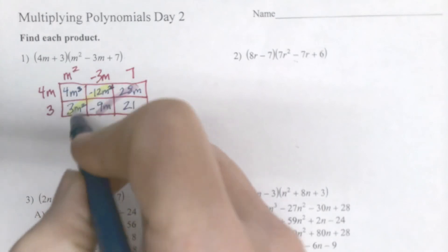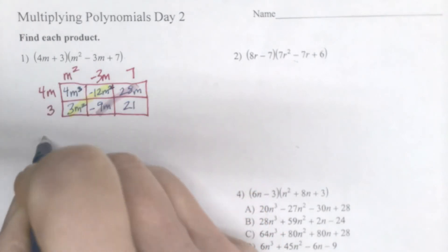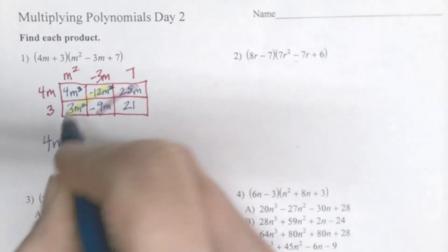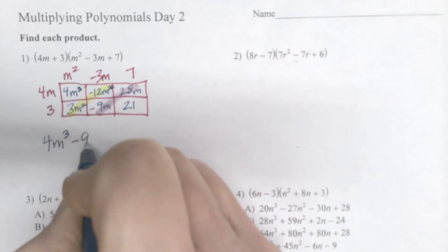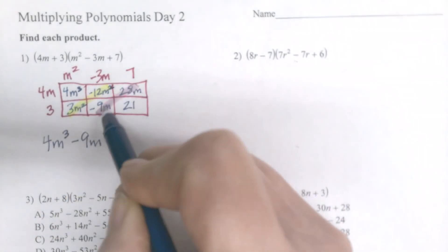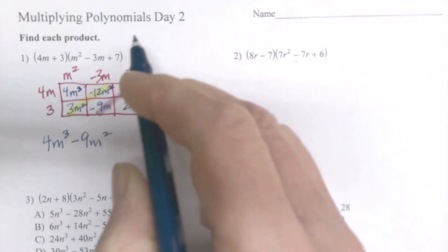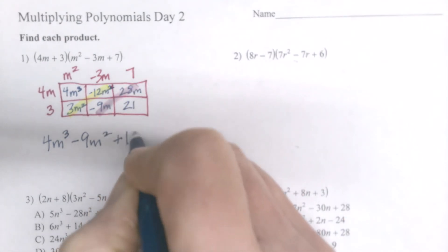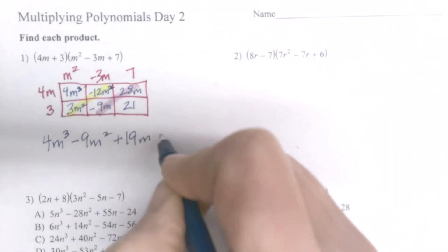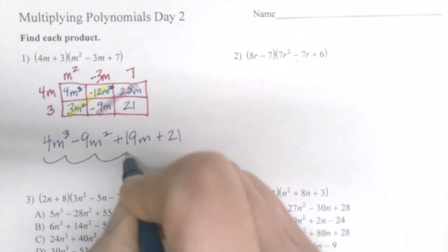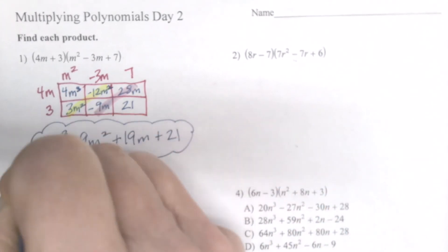And so my final answer will list, in simplified form, the first 4m cubed, then I'll combine these two, minus 9m squared, I'll combine the next two, that's plus 19m, 28 minus 9. And then the last one is 21. So there is my final answer on that.